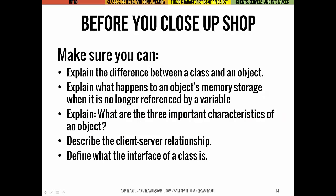We talked about a lot of stuff today, mostly at a conceptual level — we'll dive into code next time. If you can explain the difference between a class and an object, describe at a high level what happens to an object's memory storage when no variable points to it, name the three important characteristics of an object, discuss the client-server relationship in terms of objects calling methods, and explain what the interface of a class is — then you should be in pretty good shape understanding this lecture.